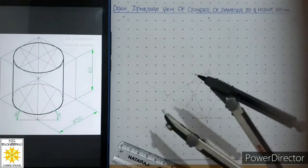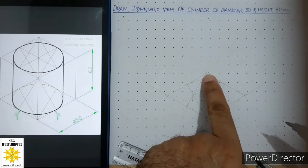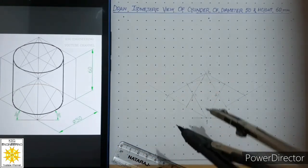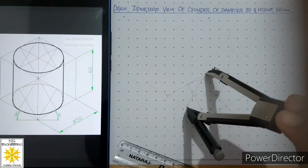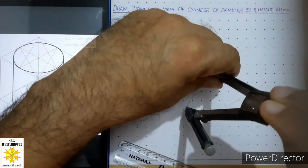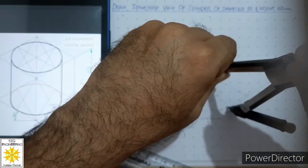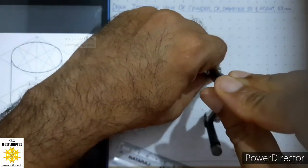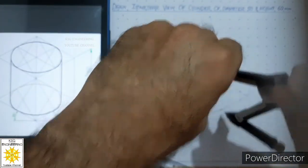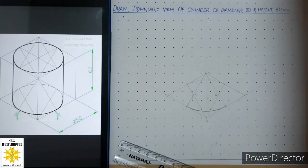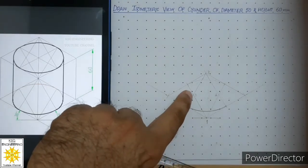After that use the same radius, place your compass at the next center, and draw a thick curve between those two points — draw it carefully. We draw a thick curve here. Now after this we will use the third intersection and take this radius to draw the third arc.